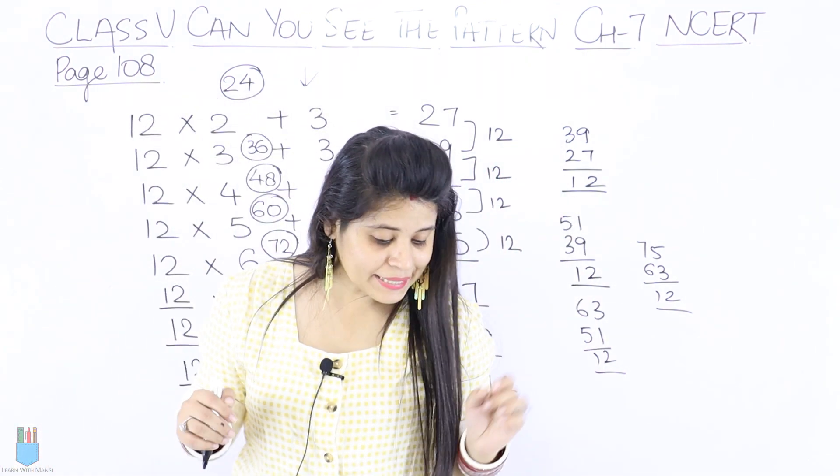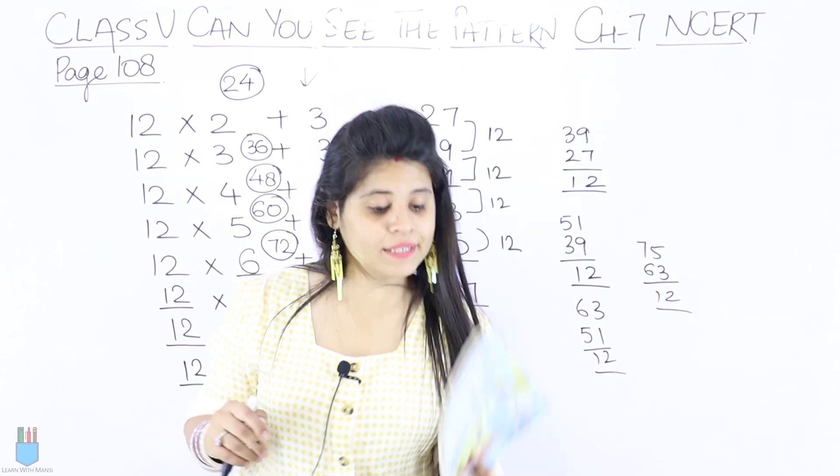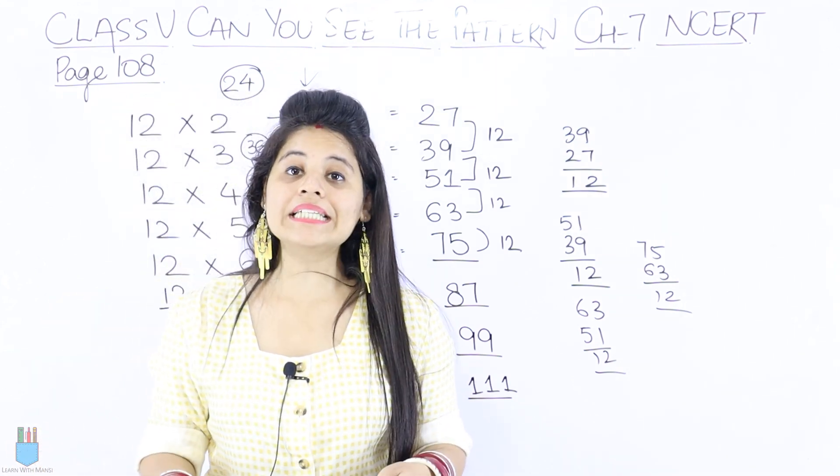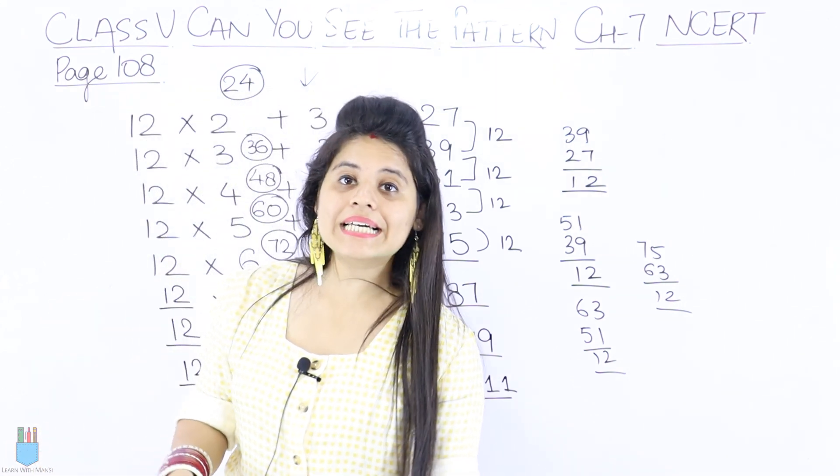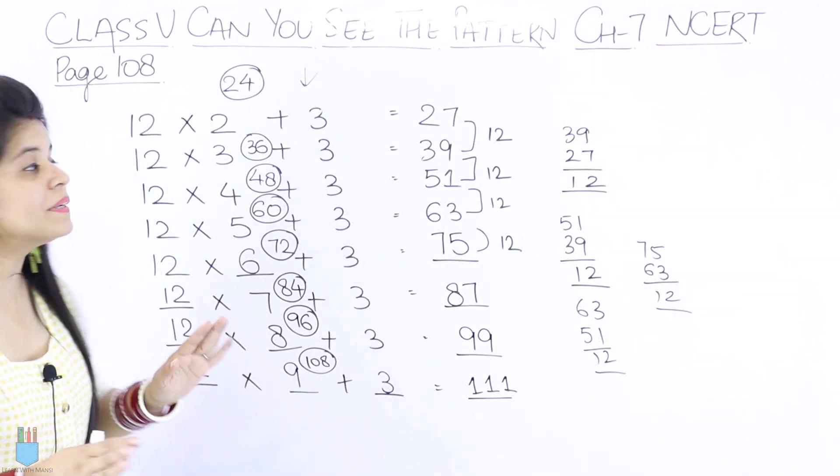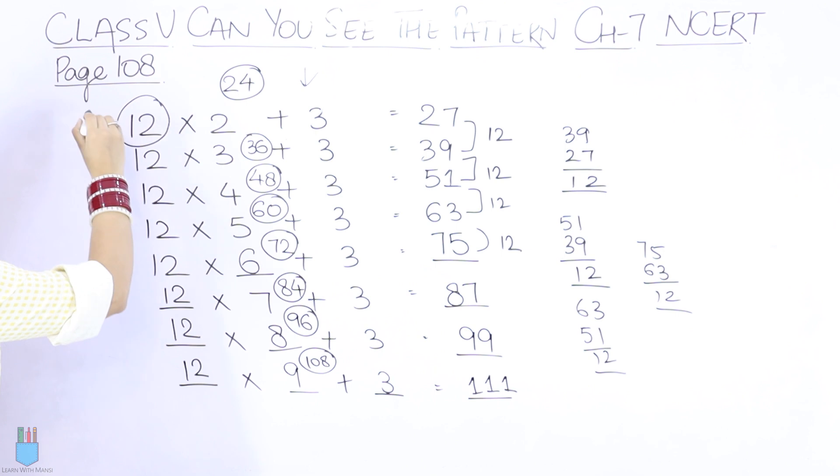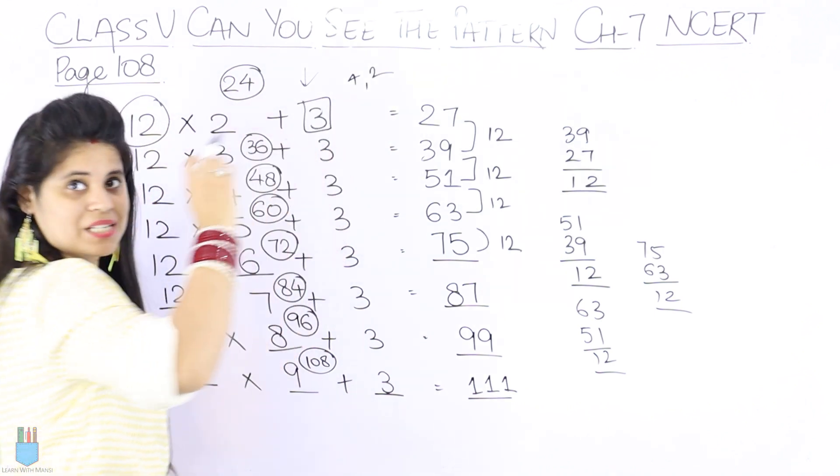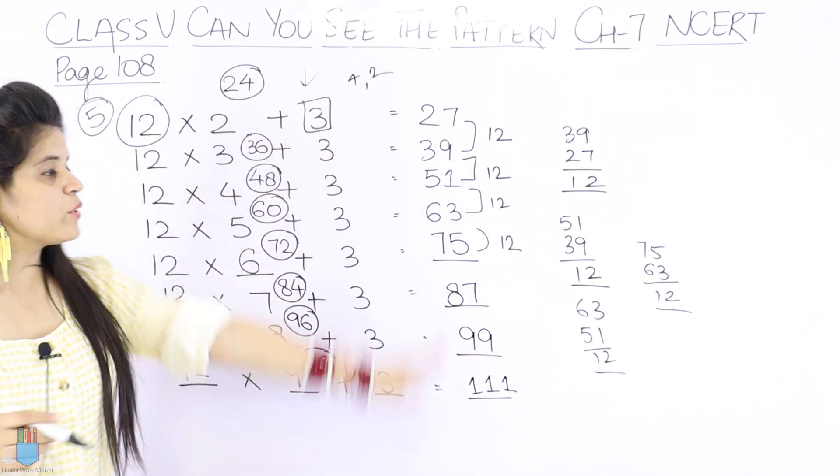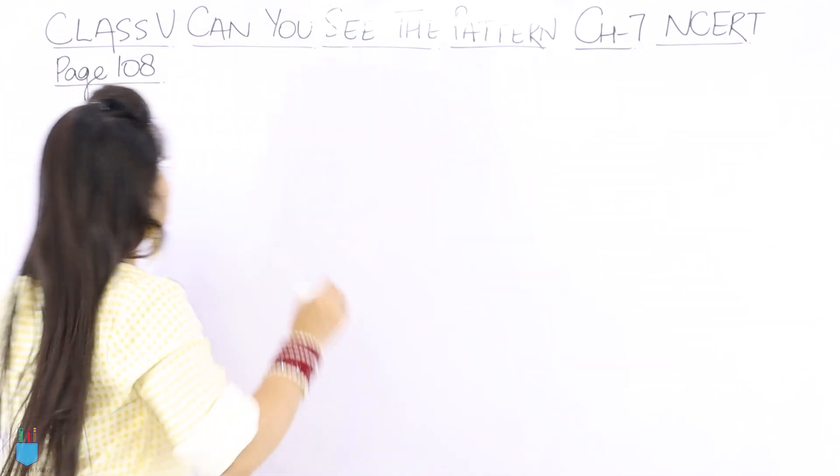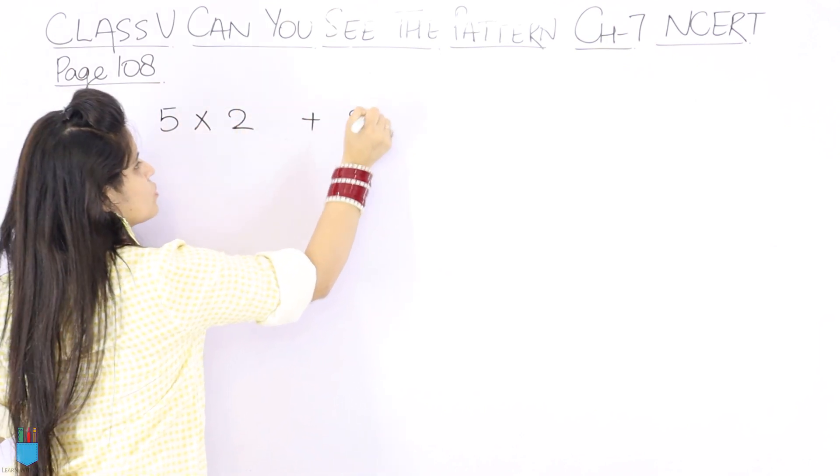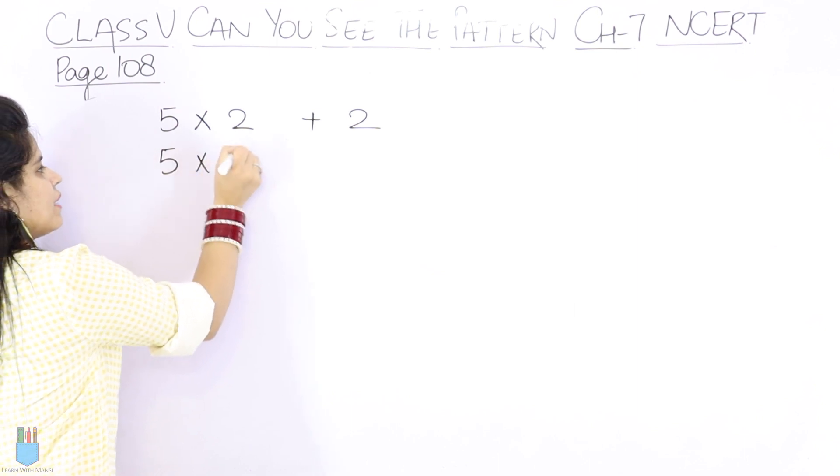So now we have to try doing it with some other number and also take a different number to add at each step. Now what we have to do, like we have done with 12, we have to change the number. We have to do 5 table, simple, and plus 2. So for that I will quickly rub.